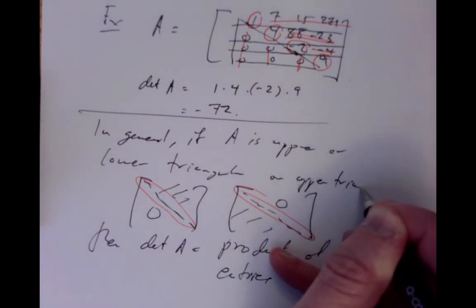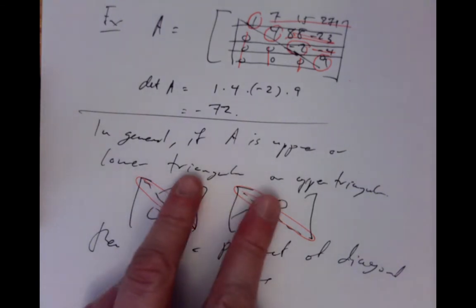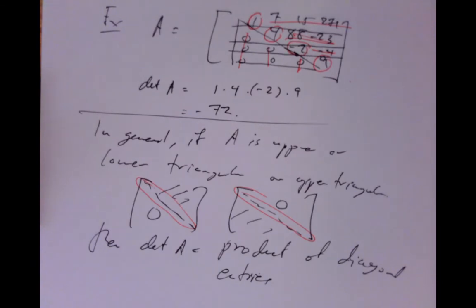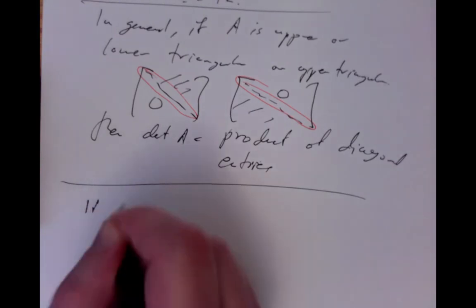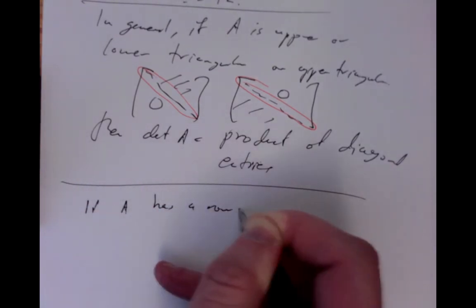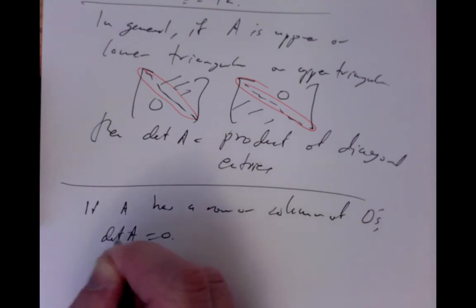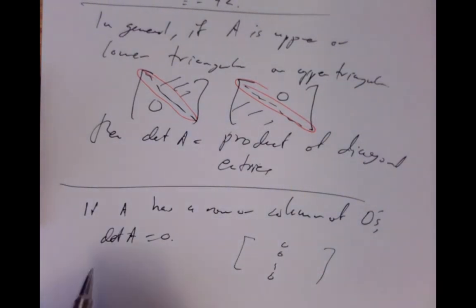This doesn't work for matrices that are not lower or upper triangular. You might try to split it into lower and upper parts, but sometimes you have to carry out permutations or row swaps to make it work. Another quick trick: if A has a row or column of zeros, then clearly det(A) = 0, because expanding down that column just gives zeros all the way.